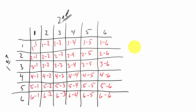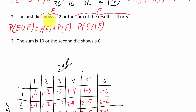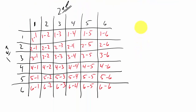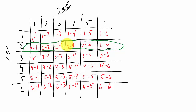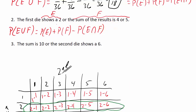Let's find P(E), the probability the first die shows a 2. Looking at this row where the first die is a 2, the number of successful outcomes is 1, 2, 3, 4, 5, 6. So P(E) = 6/36.